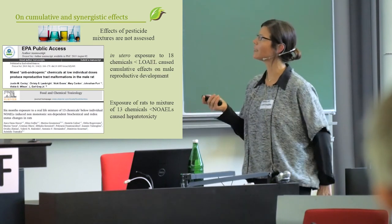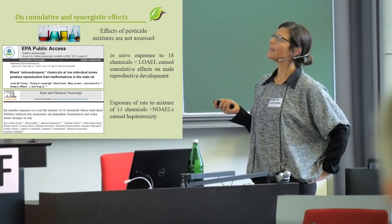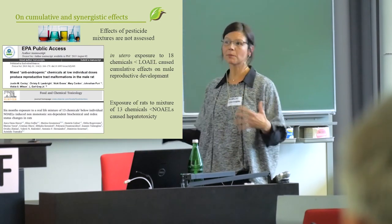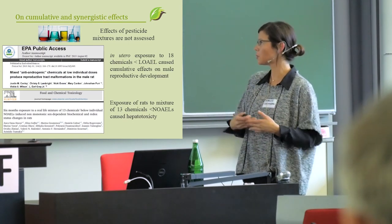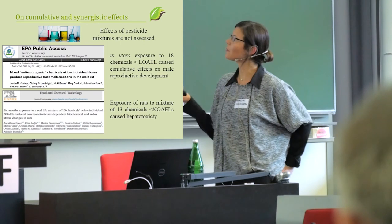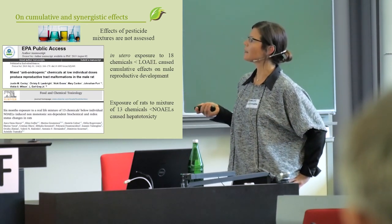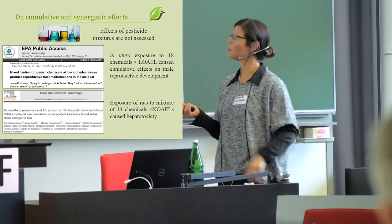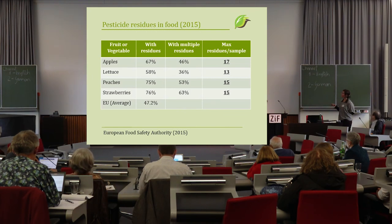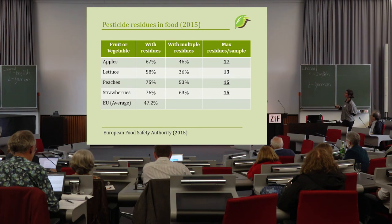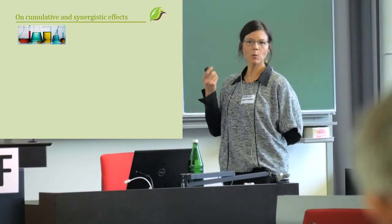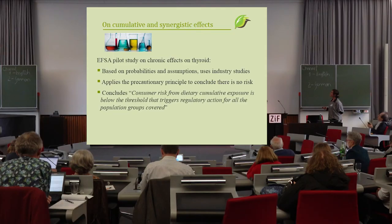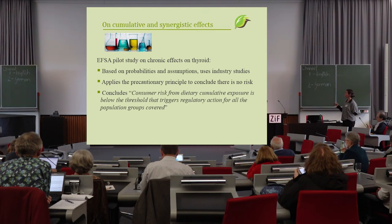The evidence shows that mixtures of chemicals — not just multiple pesticides but also combinations with substances like aspartame or other chemicals — may have adverse effects below the no-observed-adverse-effect levels set for individual substances. For example, a single sample of apples may contain up to 17 different pesticides, yet these are never assessed in combination.